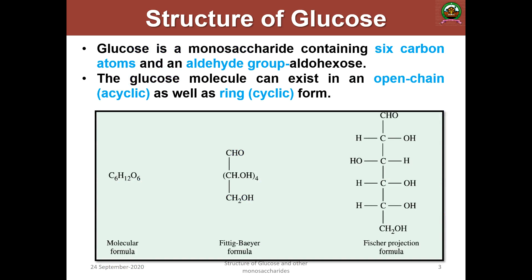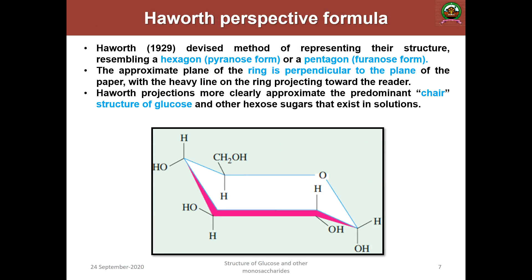In addition to the fitting Baeyer's formula and Fischer projection formula, the well-studied formula is known as the Haworth perspective formula. The great scientist Haworth in 1929 represented the structure by resembling a hexagon — that is the pyranose form — or a pentagon, the furanose form. In this representation, the approximate plane of the ring is perpendicular to the plane of the paper, with heavy lines on the ring projecting towards the reader. This projection formula is known as the chair structure of glucose.